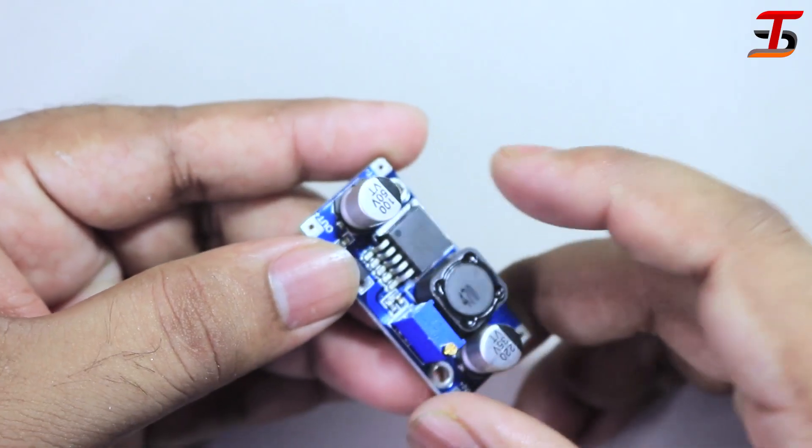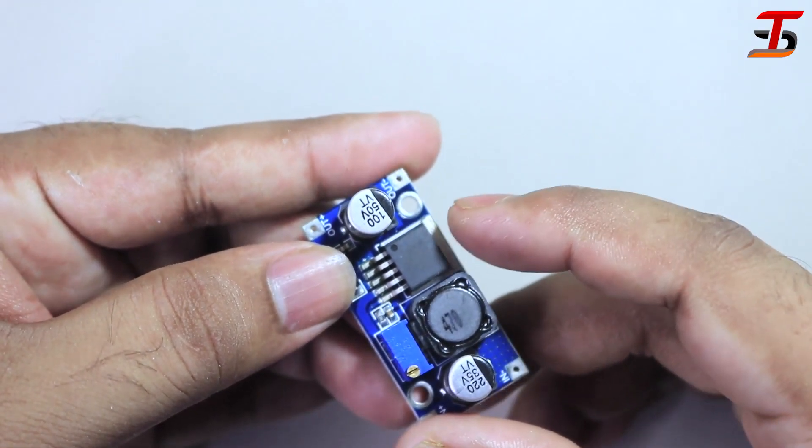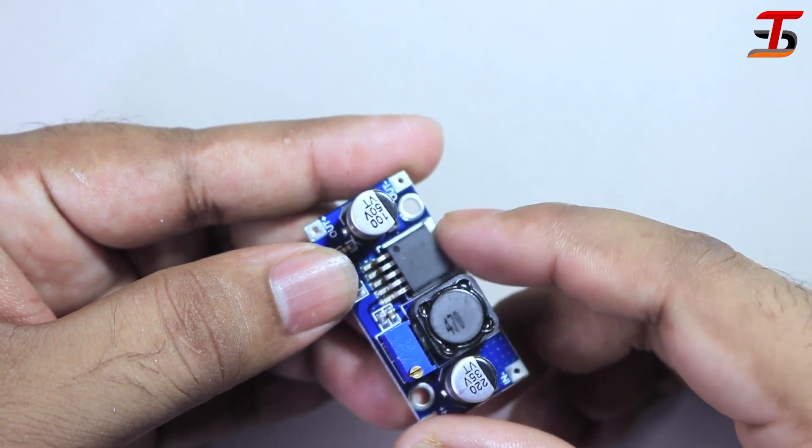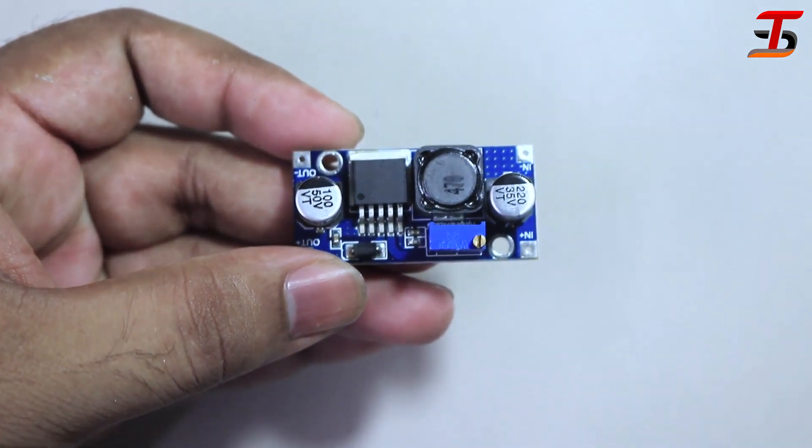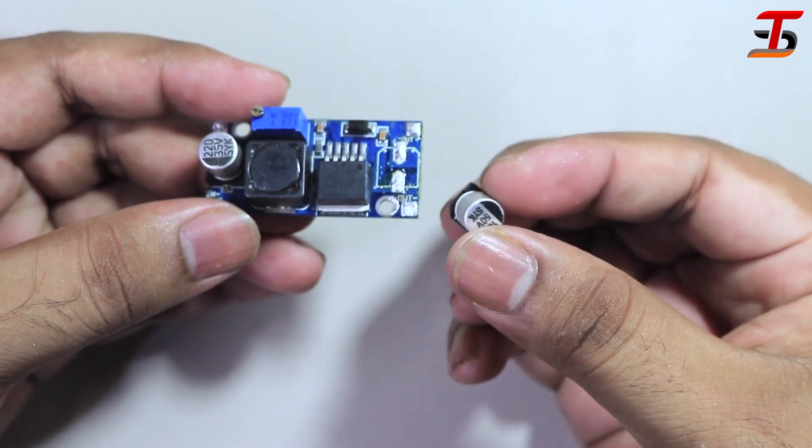First of all, I remove the capacitor, then remove the IC. Because I will use a heat sink on the IC. I remove the capacitor.